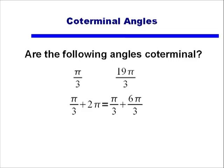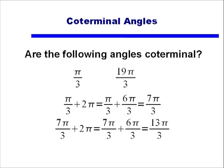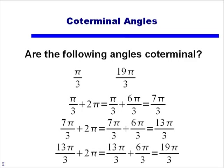So if I have my angle of π/3 and I add to it 2π, after changing it to a common denominator, I find that I get 7π/3. I'm not there yet, so I'll take my 7π/3, add to that another rotation, and then I end up at 13π divided by 3. Still not quite done, so I'll add one more rotation, and once I add that last rotation, I do get to 19π/3.